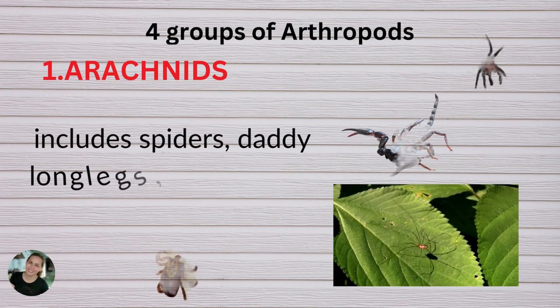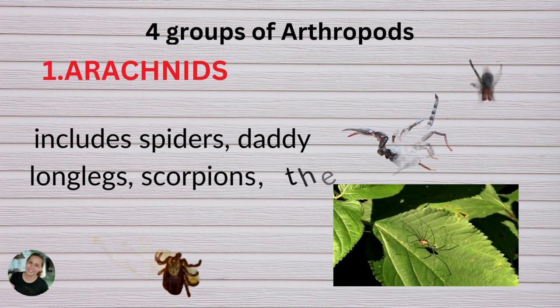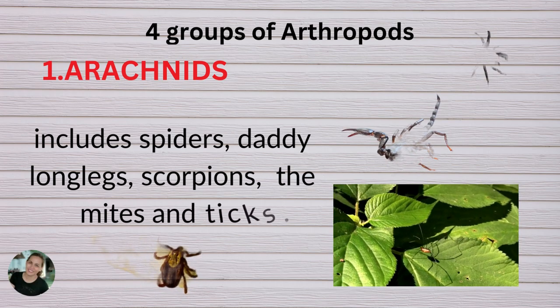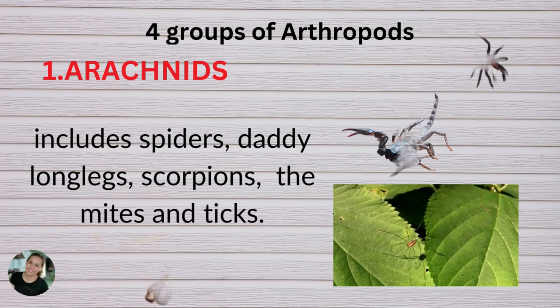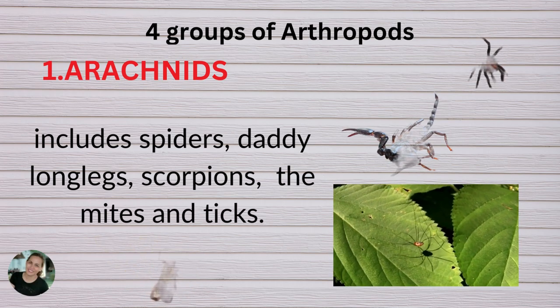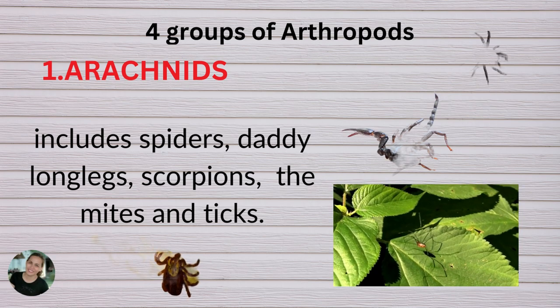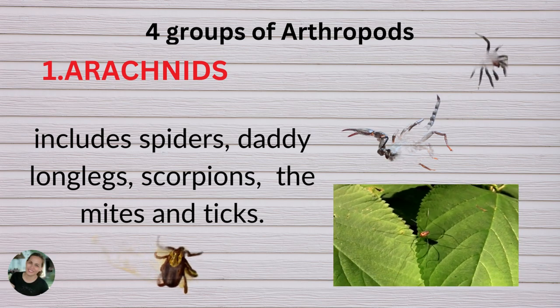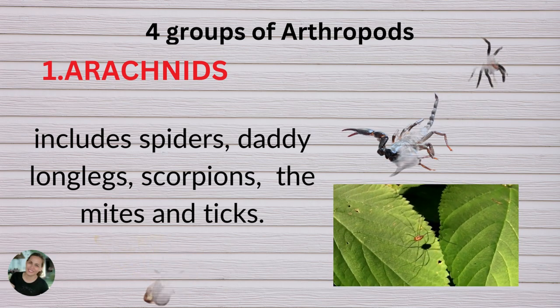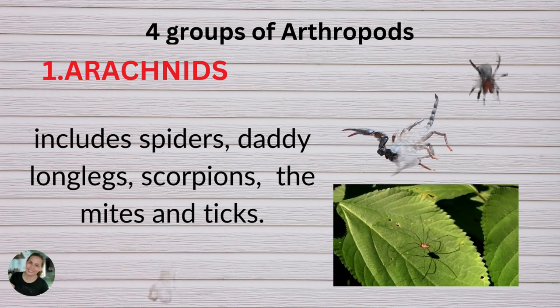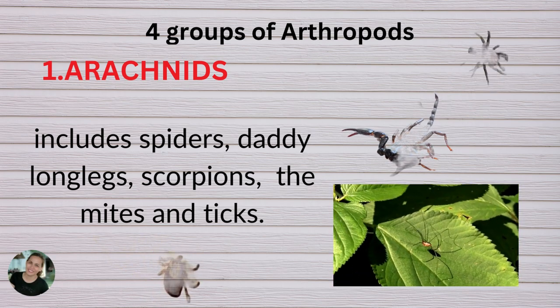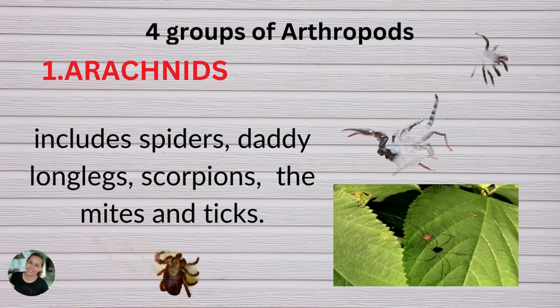There are four groups of arthropods. The first one is arachnids. This includes spiders, daddy long legs, scorpions, mites, and ticks.